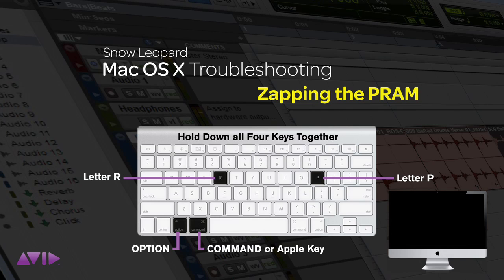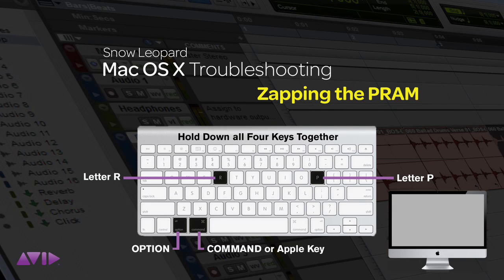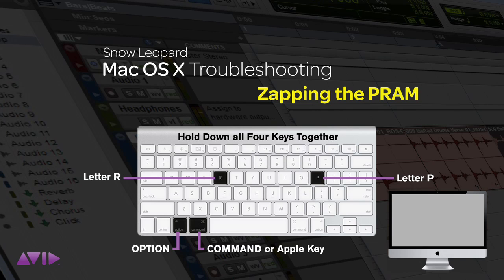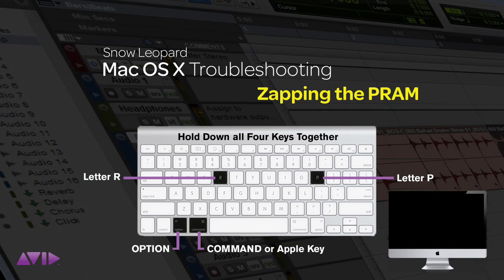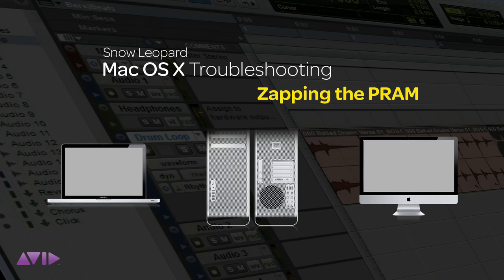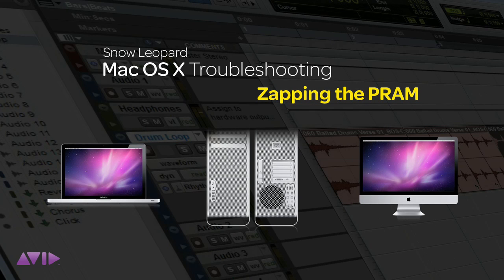You'll hear the familiar chime. Keep this key combination pressed and you'll hear a second chime. Keep them pressed down and you'll hear a third one. Now let go of the keyboard and let the Mac start up as normal. That's it — you've just zapped your PRAM.